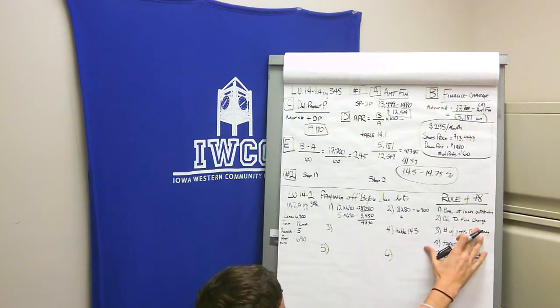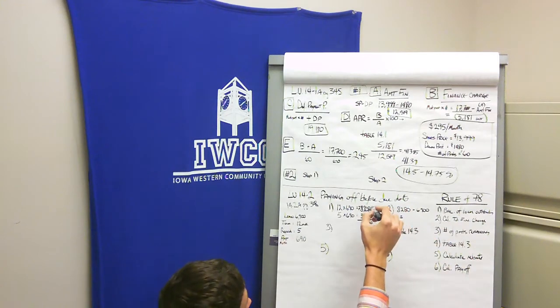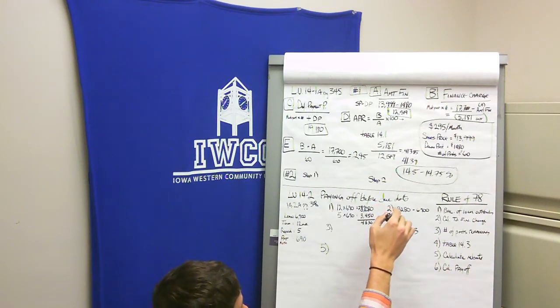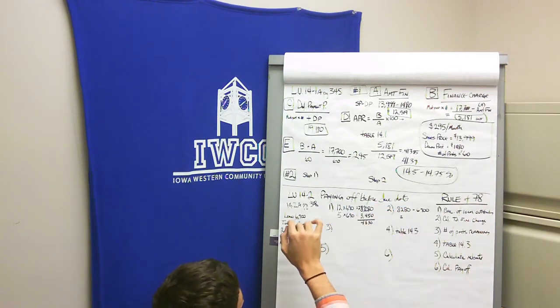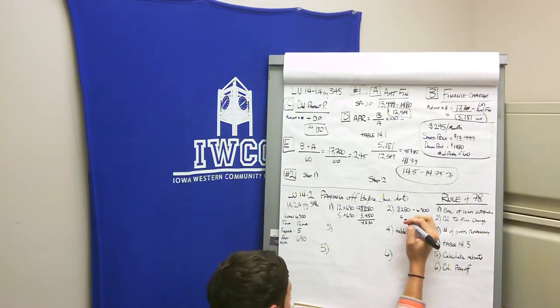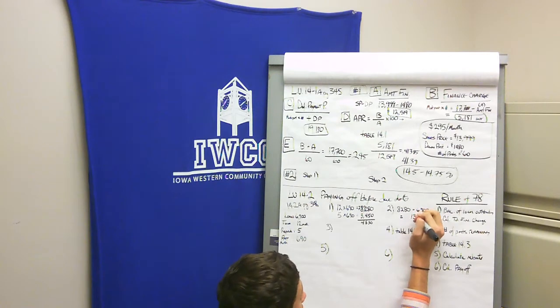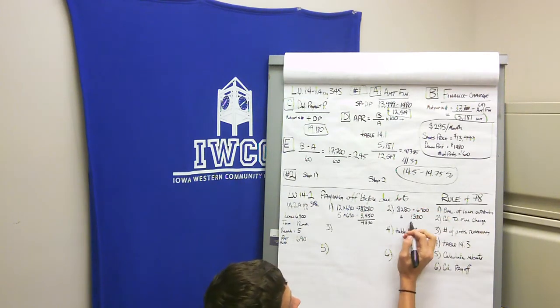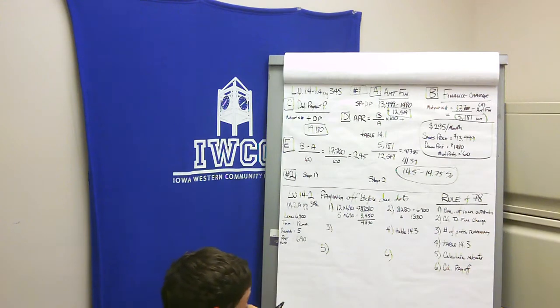We then calculate our total finance charge. If $8,280 is how much we're going to pay after 12 months, we subtract our loan of $6,900. After doing the subtraction, we see we're going to pay $1,380 in interest.